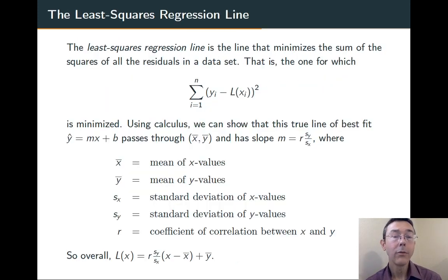If we do that for every point in our data set, we take the residual, the actual minus the expected, we square it, we add that up among all the points in our data set, we get a quantity that we can minimize.